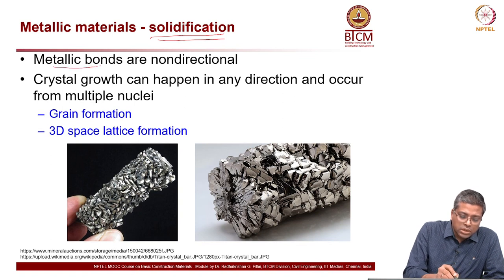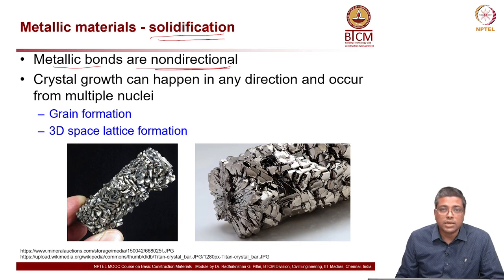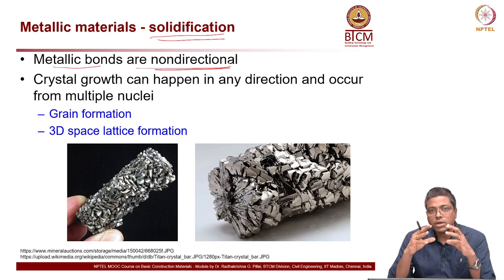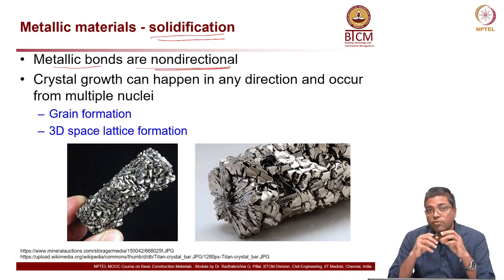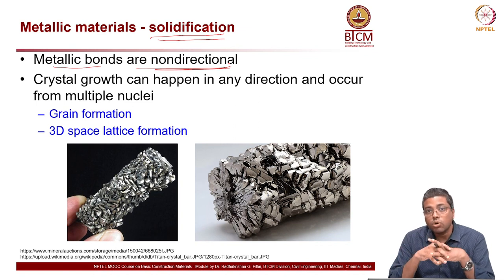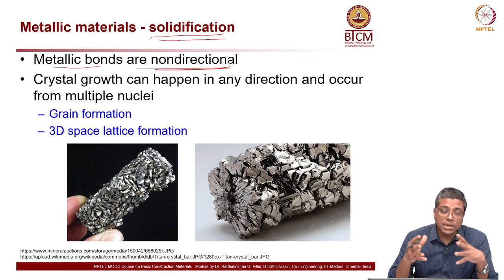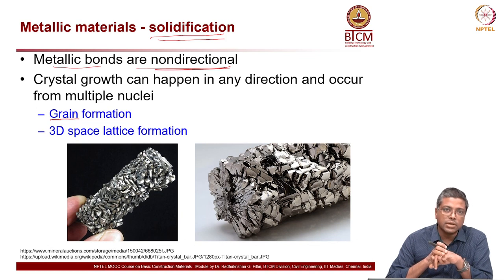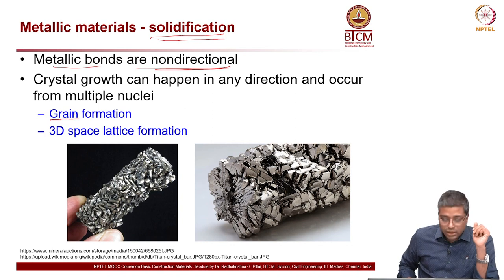One important thing to note is that most metallic bonds are non-directional in nature. When the molten material is cooled down and the temperature comes down, crystals start forming. Depending on the rate at which it is cooled, the way in which the crystals grow also matters. The size of the crystals — or grains, as we will call them later — and imperfections inside the metal in 3D space are heavily dependent on the rate of cooling and the temperature adopted.